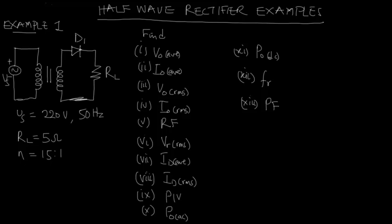Welcome to today's class. In today's class we are going to discuss half wave rectifier examples. Example one: shown here you have the circuit of a half wave rectifier. The supply voltage is 220 volts, 50 hertz. Diode D1 is the half wave rectifier and RL is the load resistor of 5 ohms, while the transformer has a turns ratio of 15 to 1.